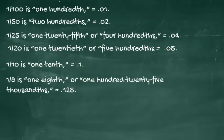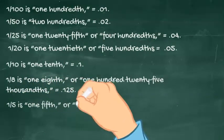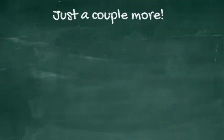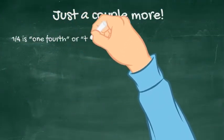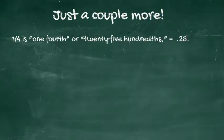1 over 5 is one fifth, or 2 tenths, expressed as a decimal it's 0.2. 1 over 4 is one fourth, or twenty-five hundredths, expressed as a decimal it's 0.25.